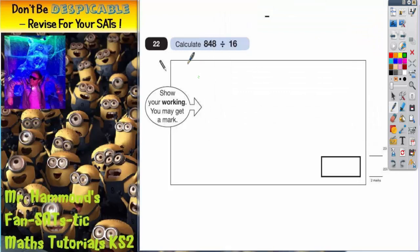Question 22. Calculate 848 divided by 16. Now anytime you're dividing by a number that's bigger than 10 and it's a two digit number, you should really be using the chunking method.